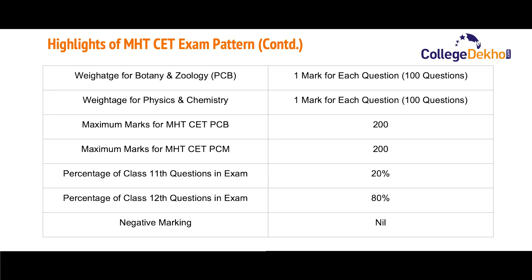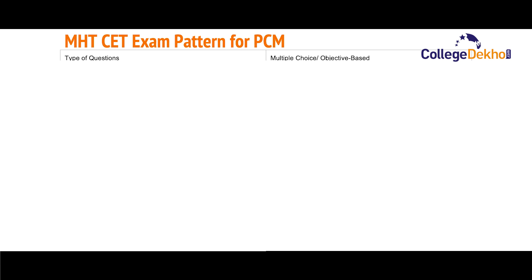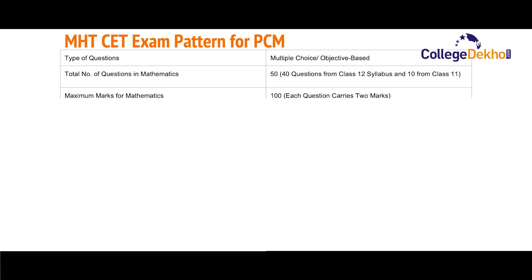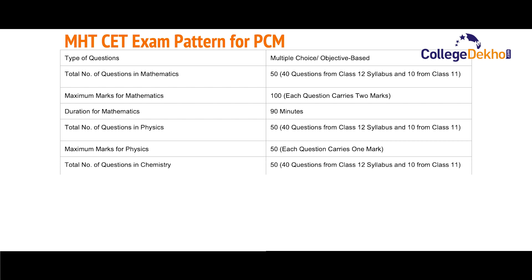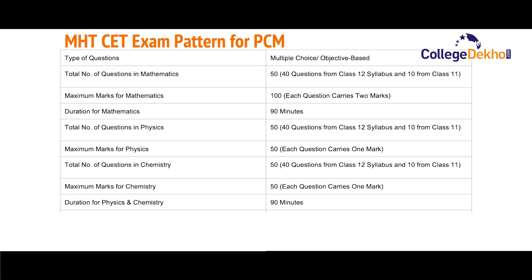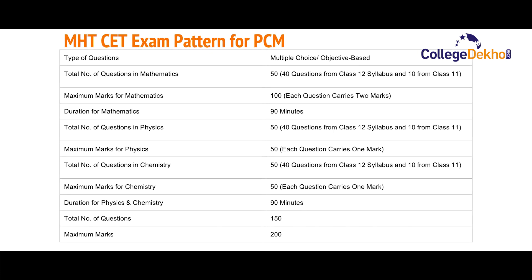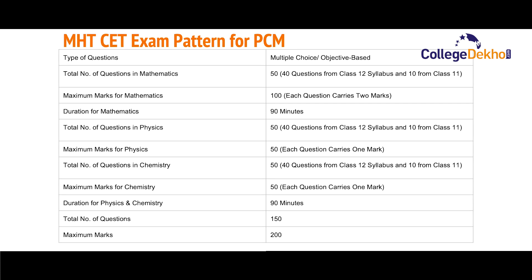There will be no negative marking in the MHT SET exam. Now let us look at the MHT SET exam pattern for the PCM group. There will be multiple choice or objective-based questions — you will be given four choices for a question, out of which one will be correct. The total number of questions in Mathematics will be 50, out of which 40 questions will be from the Class 12 syllabus and 10 from Class 11. The maximum marks for Mathematics will be 100, with each question carrying two marks. The duration for the Mathematics exam will be 90 minutes.